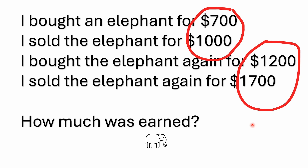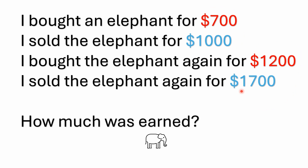The thing to zero in on is that you bought the elephant twice and sold it twice — a buy and a sell, then another buy and a sell. We know he bought it for $700 and sold it for $1,000, then bought it for $1,200 and sold it for $1,700. You can treat these separately as two separate sets of transactions — it makes no difference that it was the same elephant.